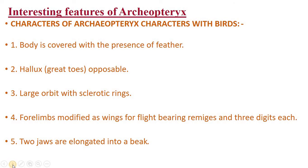Third character: large orbit with sclerotic rings. The eyeballs were large with sclerotic rings. Similarly in birds, we see large eyes and they have the sclerotic membrane. Further, forelimbs are modified to wings for flight bearing remiges, with three digits each. The forelimbs are modified to wings for flight bearing remiges — remiges refer to the long feathers helpful for flight, found only in the forelimbs or wings, not elsewhere in the body of the birds.